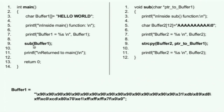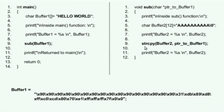The second function is being called from the main function with the pointer buffer1 passed. In the main program, it declares a character buffer and initializes it with the string 'hello world'. The sub function receives a pointer to character and copies the contents of that pointer into a local buffer which is declared with size 12 bytes, using the string copy function.